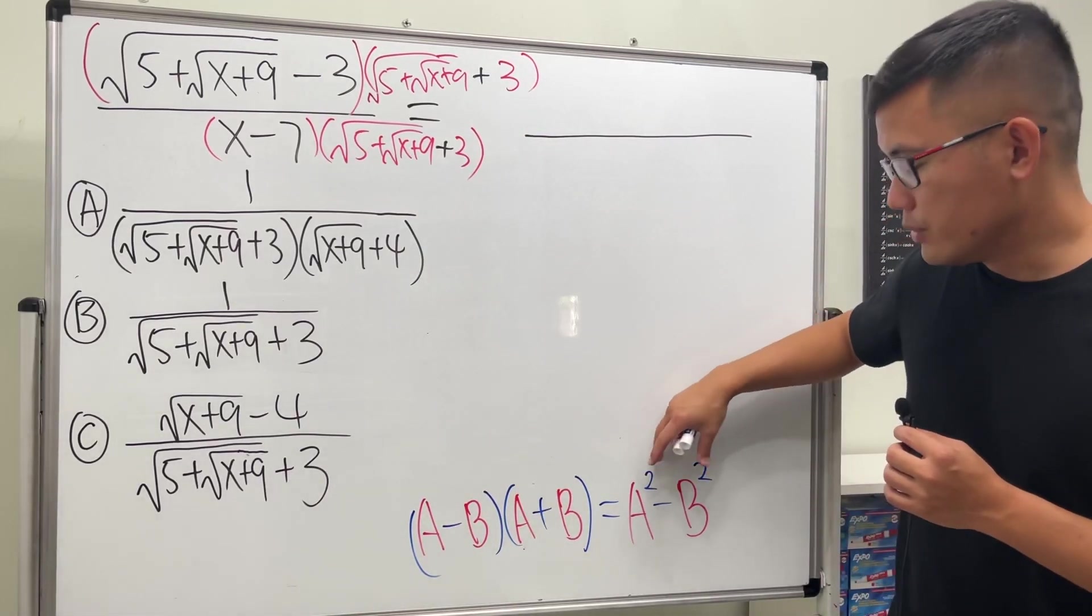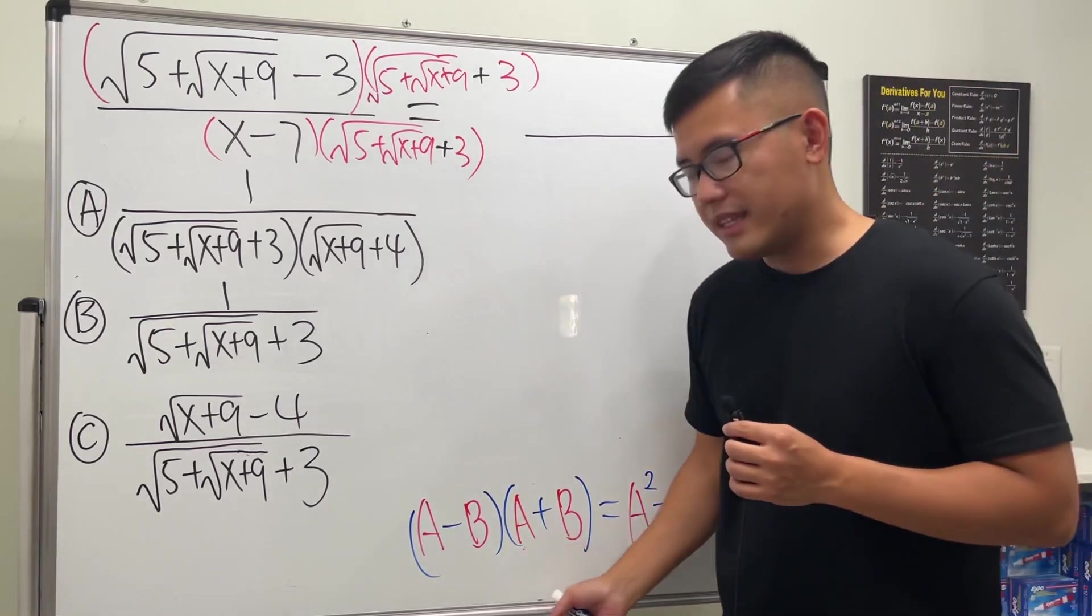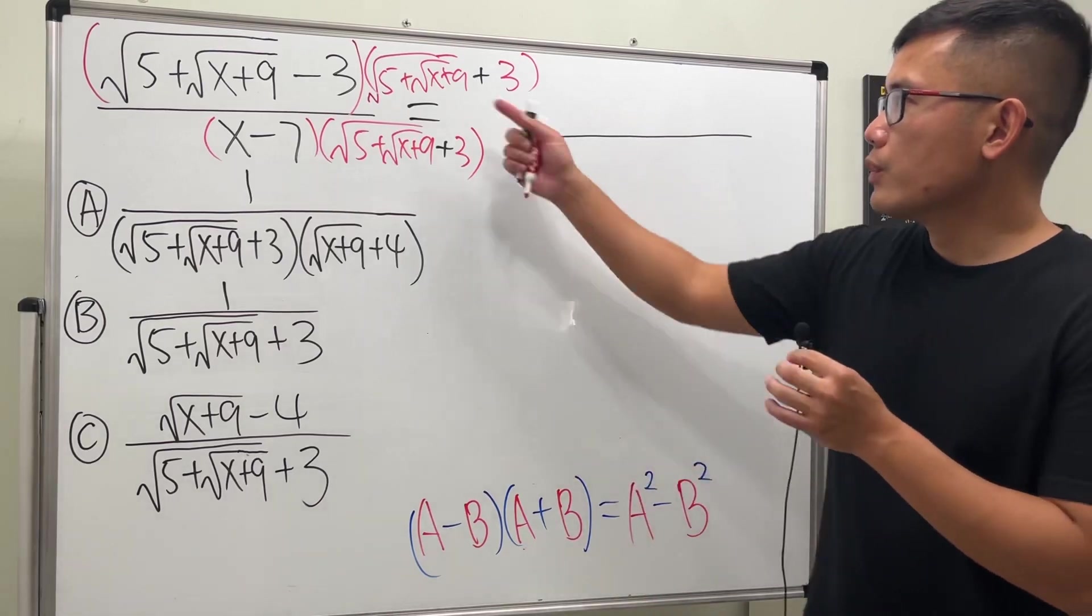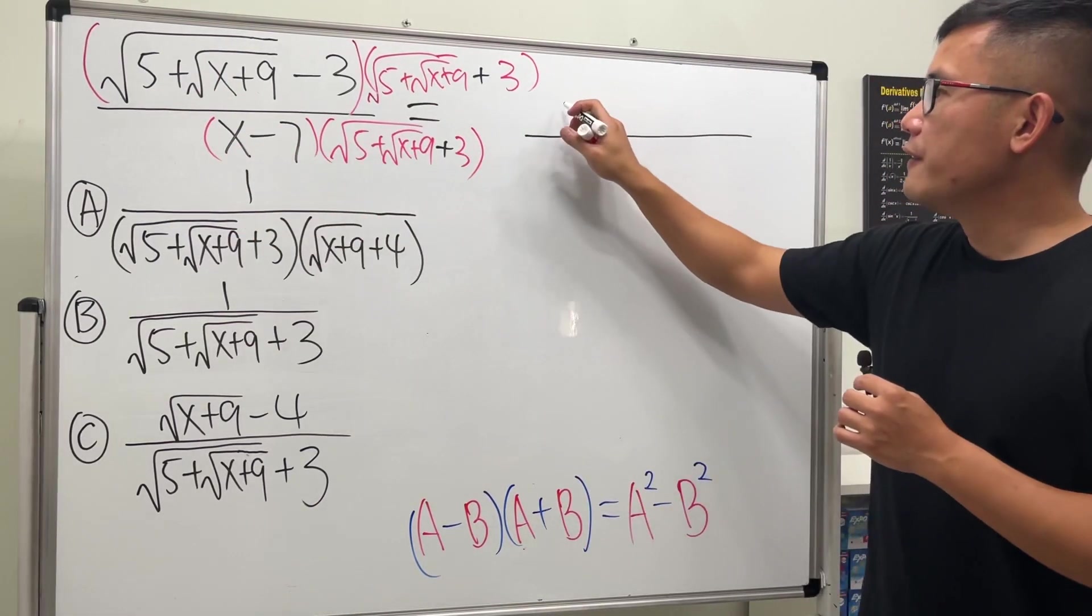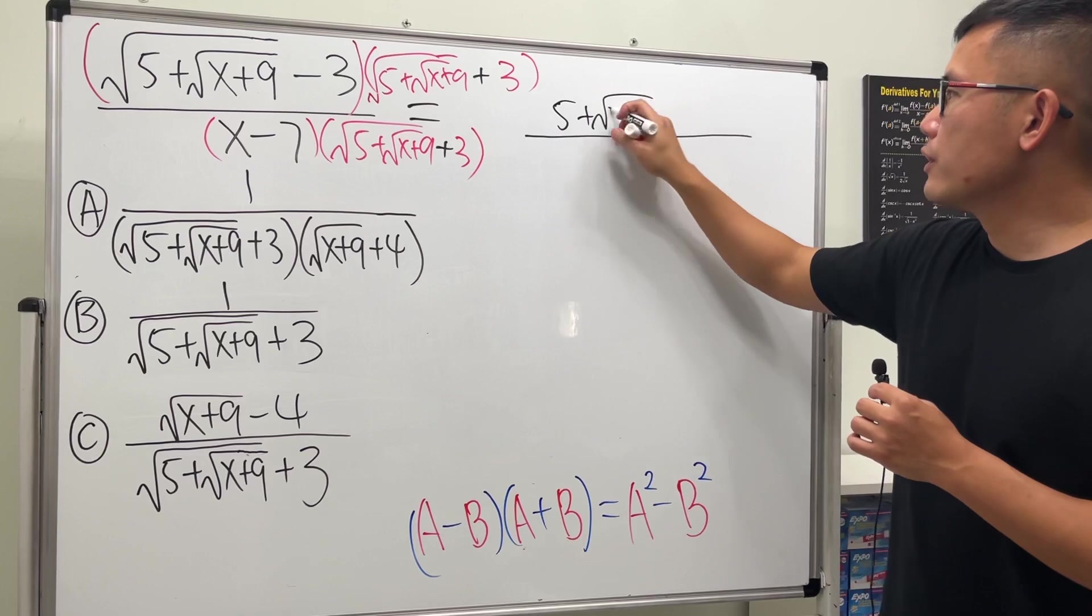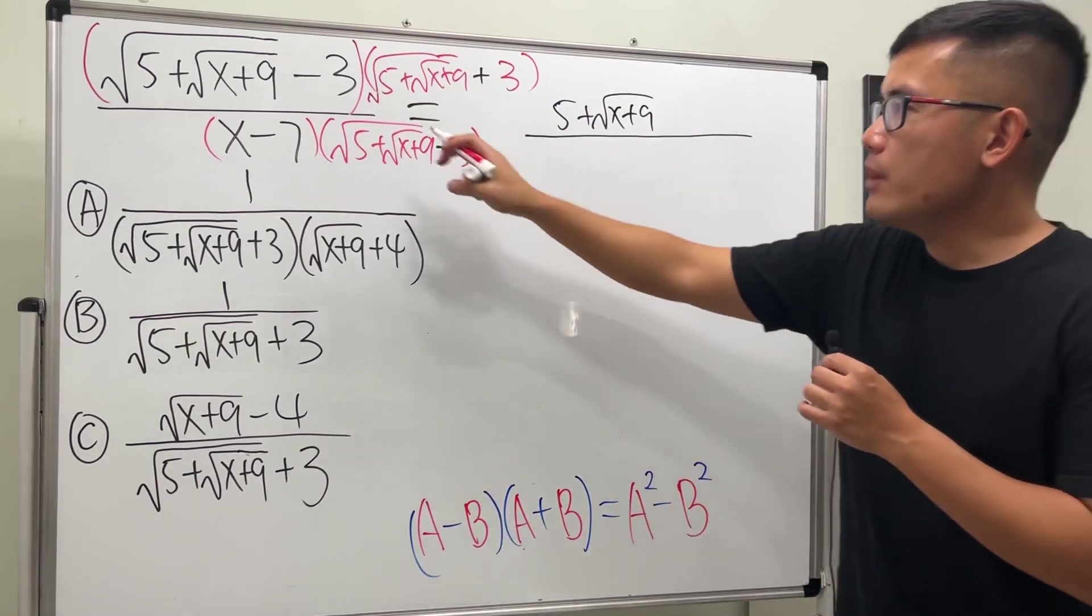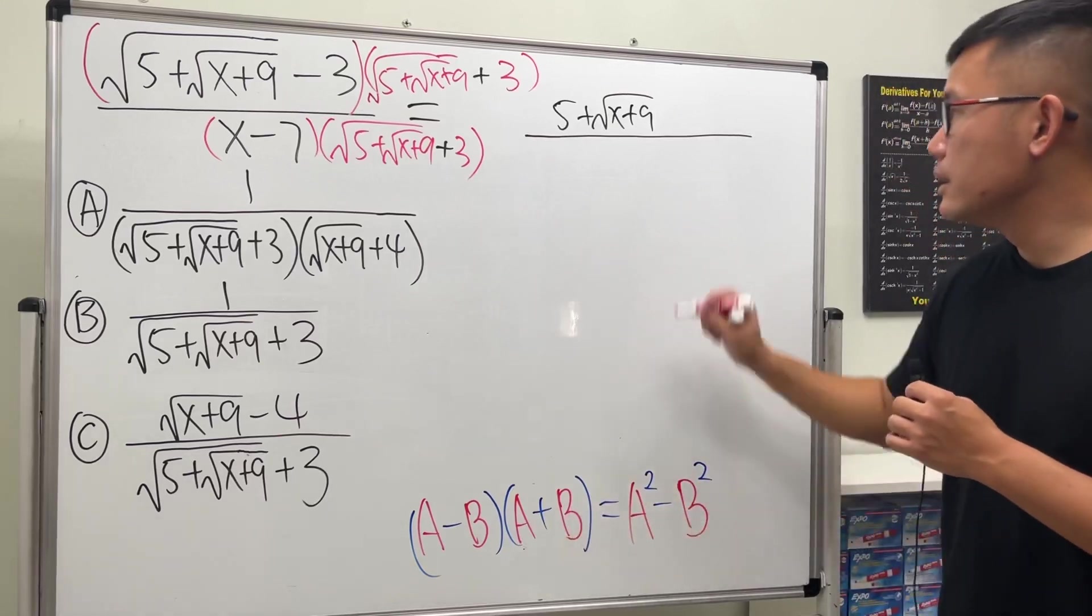So that's the idea of using the conjugate. With that being said, we can just square the first term so we get 5. The square root of square root of x+9 - the outer square root just gets canceled out. Then we have the minus, and then we square the 3, so 3² is 9.